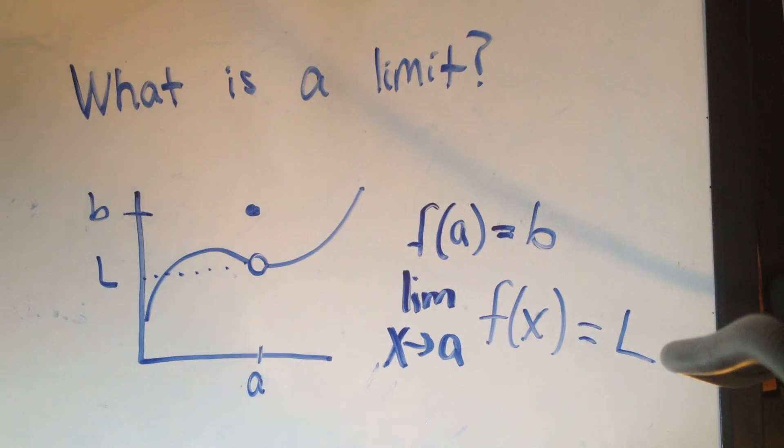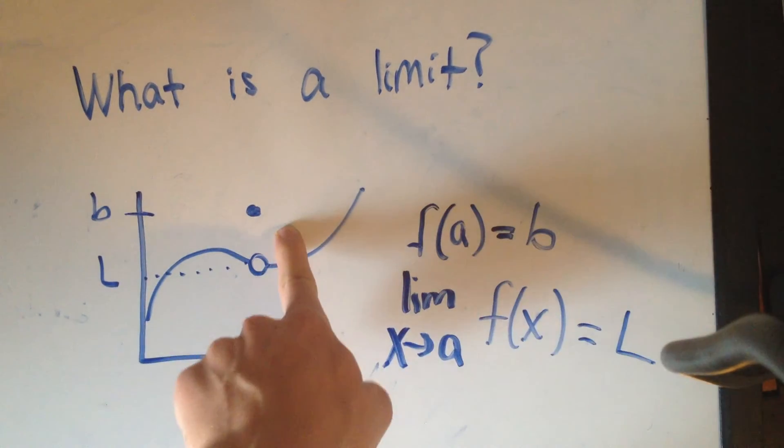So I think you'll agree with me, that's a little bit confusing. But all it's really saying is we don't have to know what the function actually does at A. In this case, at A, we're at B.